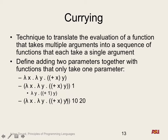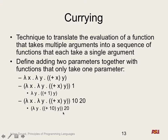Now what happens if I apply this to 10 and 20? With our disambiguation rules, application is left associative, so the inner application happens first. We replace all x in the body with 10, returning lambda y dot plus 10 y. Now we have a new abstraction — we replace y with 20, getting plus 10 y, which means we're adding 10 and 20 together, eventually giving us 30.